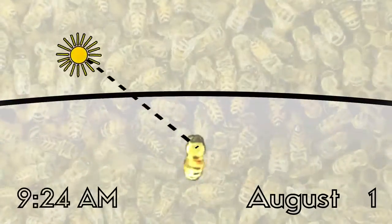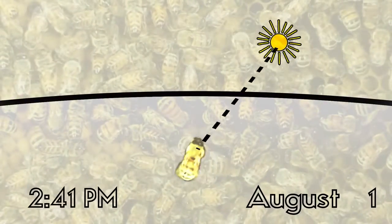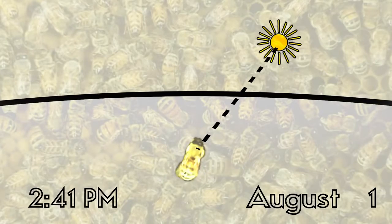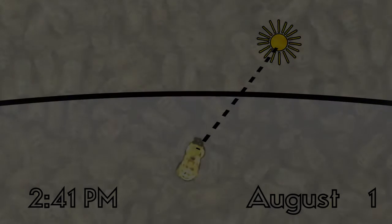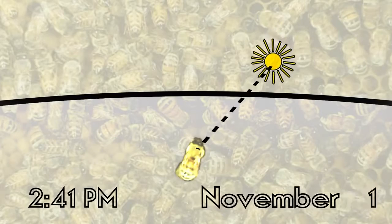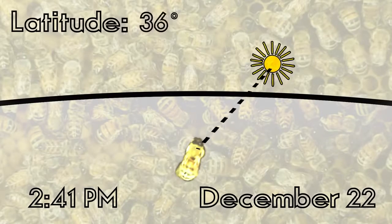In this way, a honeybee can know the current orientation of the sun even after spending many hours within a dark hive. They can even take into account changes in seasons or latitudes.